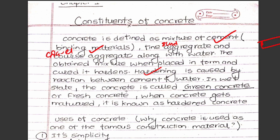In a wet state, the concrete is called green concrete. It is also called fresh concrete. When concrete gets mature, it is known as hardened concrete.